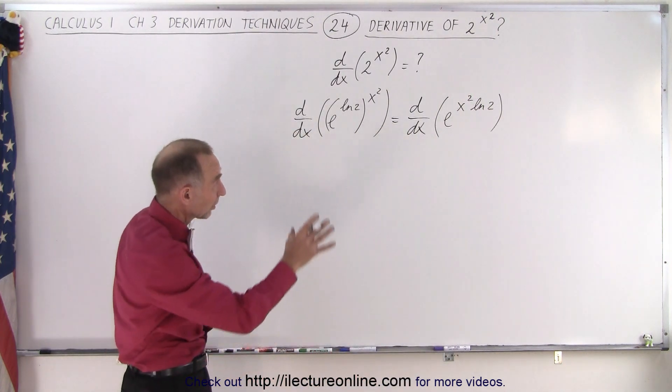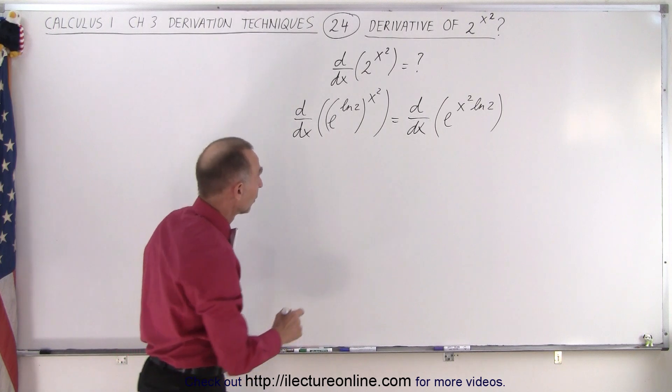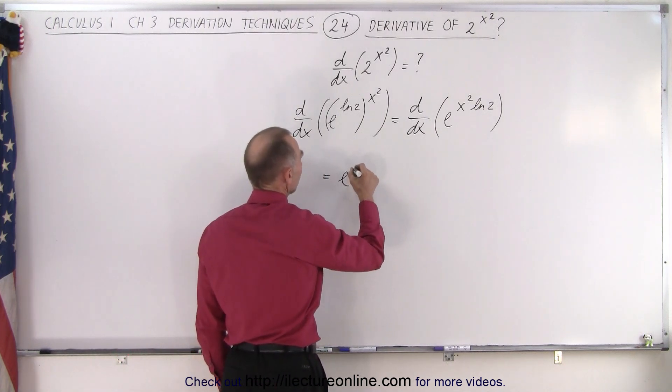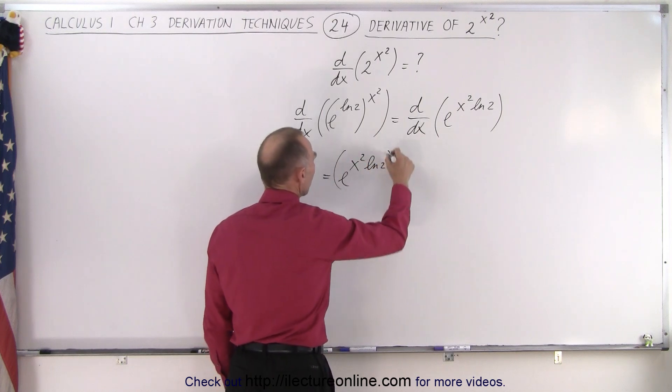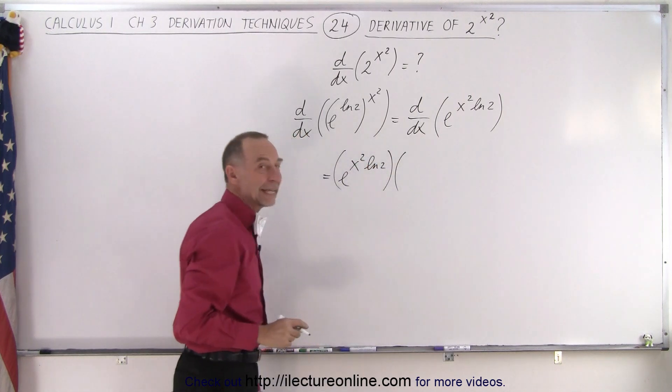Now we know how to take the derivative of that. It equals e to the x squared times the natural log of 2, multiplied by the derivative of the exponent.